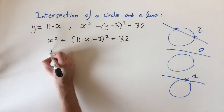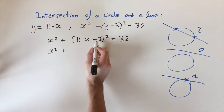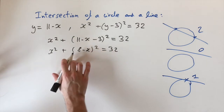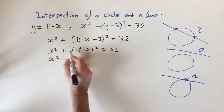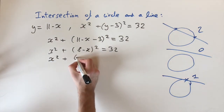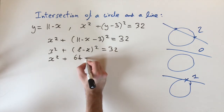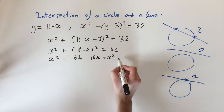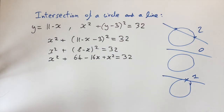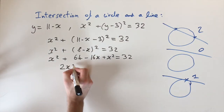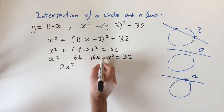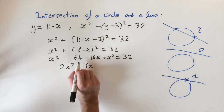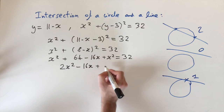It's just algebra from here. We simplify 11 minus x minus 3 as 8 minus x, squared, equals 32. Expanding: x squared plus 64 minus 16x plus x squared equals 32. Collecting terms: we get two x squared terms, one x term of minus 16x, and then we bring the 32 over — subtracting 64 minus 32 gives plus 32 — so 2x squared minus 16x plus 32 equals 0.